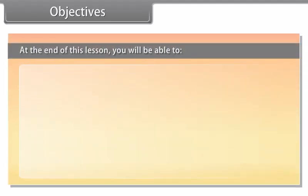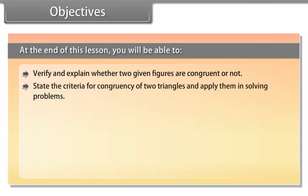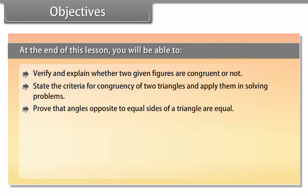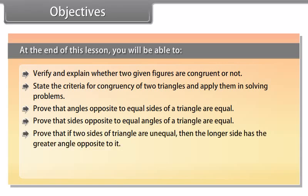At the end of this lesson, you will be able to: verify and explain whether two given figures are congruent or not; state the criteria for congruency of two triangles and apply them in solving problems; prove that angles opposite to equal sides of a triangle are equal; prove that sides opposite to equal angles of a triangle are equal; prove that if two sides of a triangle are unequal, then the longer side has the greater angle opposite to it; state and verify inequalities in a triangle; and solve problems based on the above results.